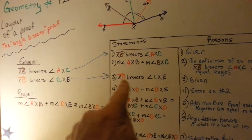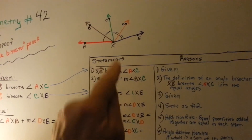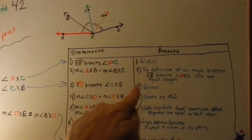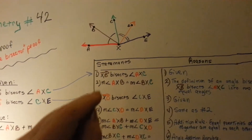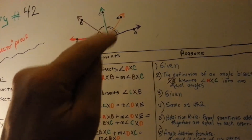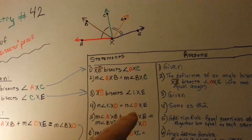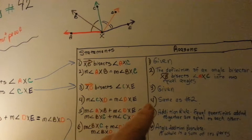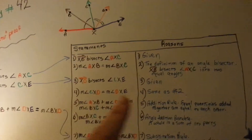Now, ray xd bisects angle cxe — that's our other given. The orange one bisects the green and purple — that's our other given, so we put 'given.' We're going to do the same thing as before: the measure of cxd — the green and orange angle — is equal to the measure of dxe — the orange and purple angle. The reason is the same: the definition of an angle bisector, which makes two equal angles.